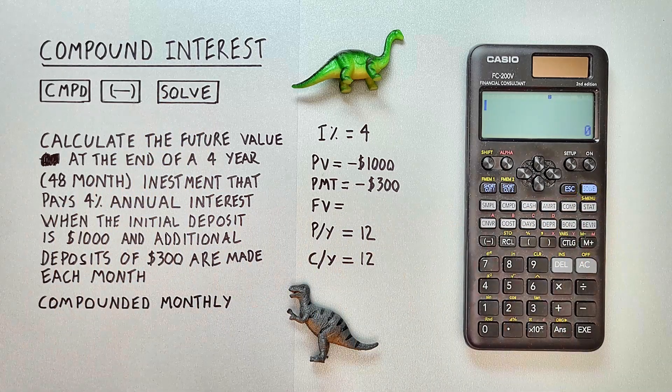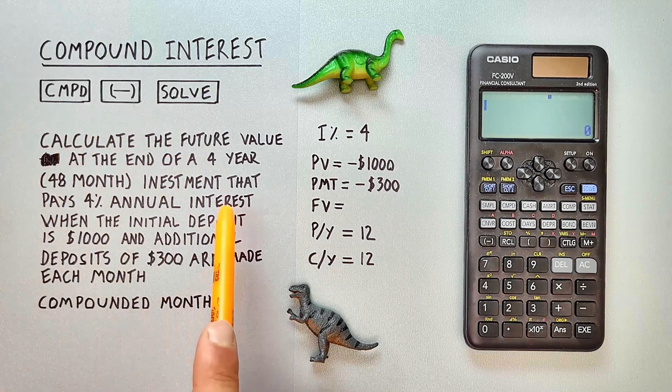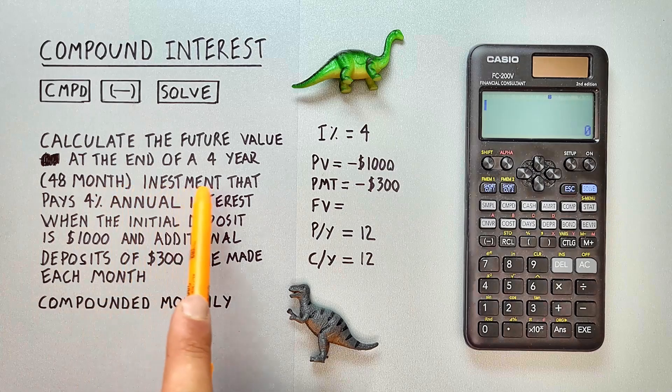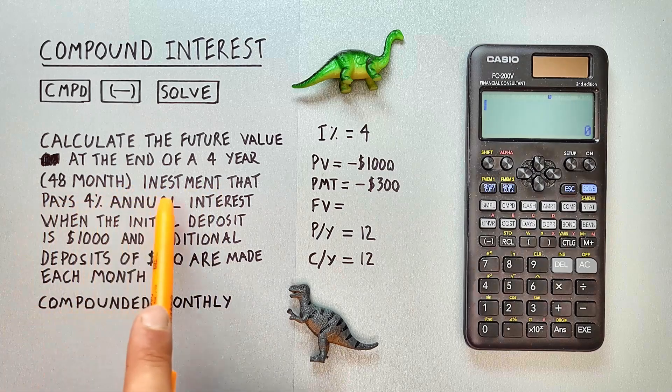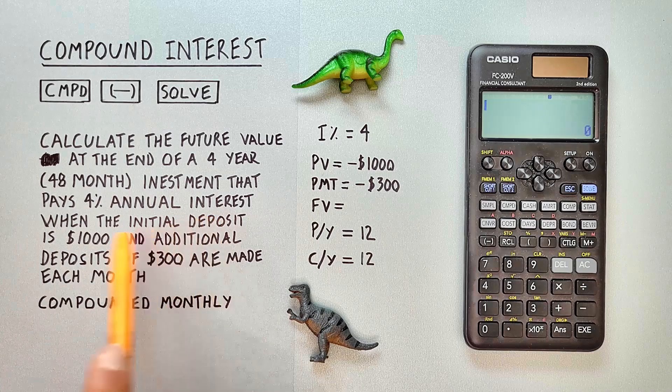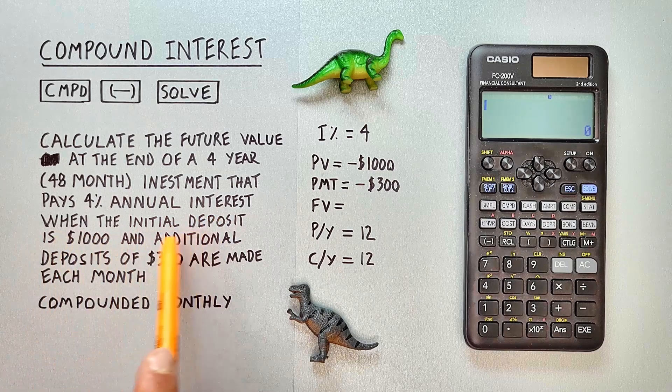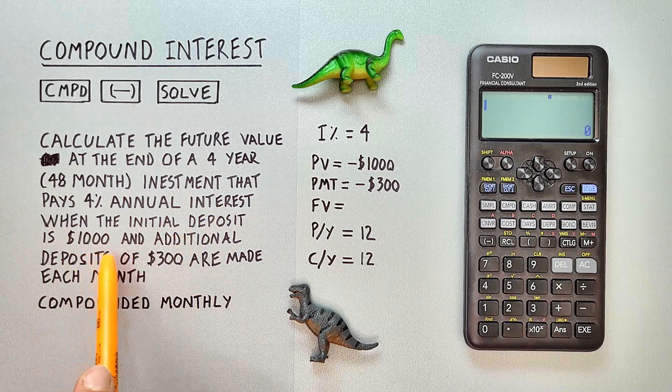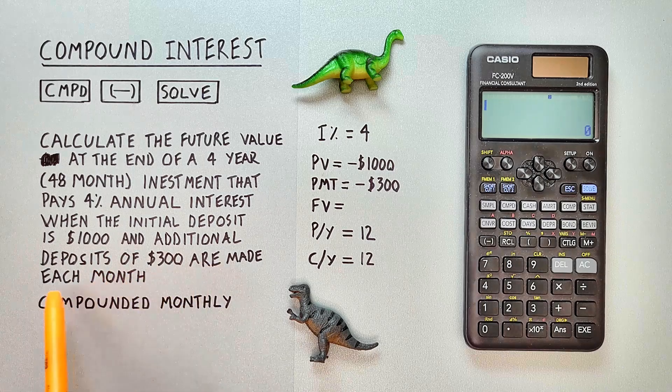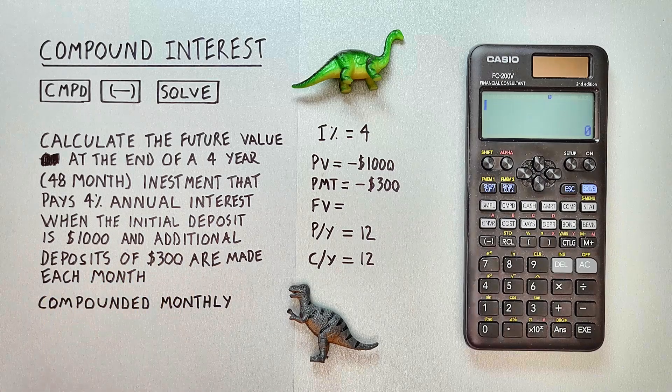All right let's say we're given this compound interest problem. Calculate the future value at the end of a four-year 48-month investment that pays 4% annual interest when the initial deposit is $1,000 and additional deposits of $300 are made each month compounded monthly.